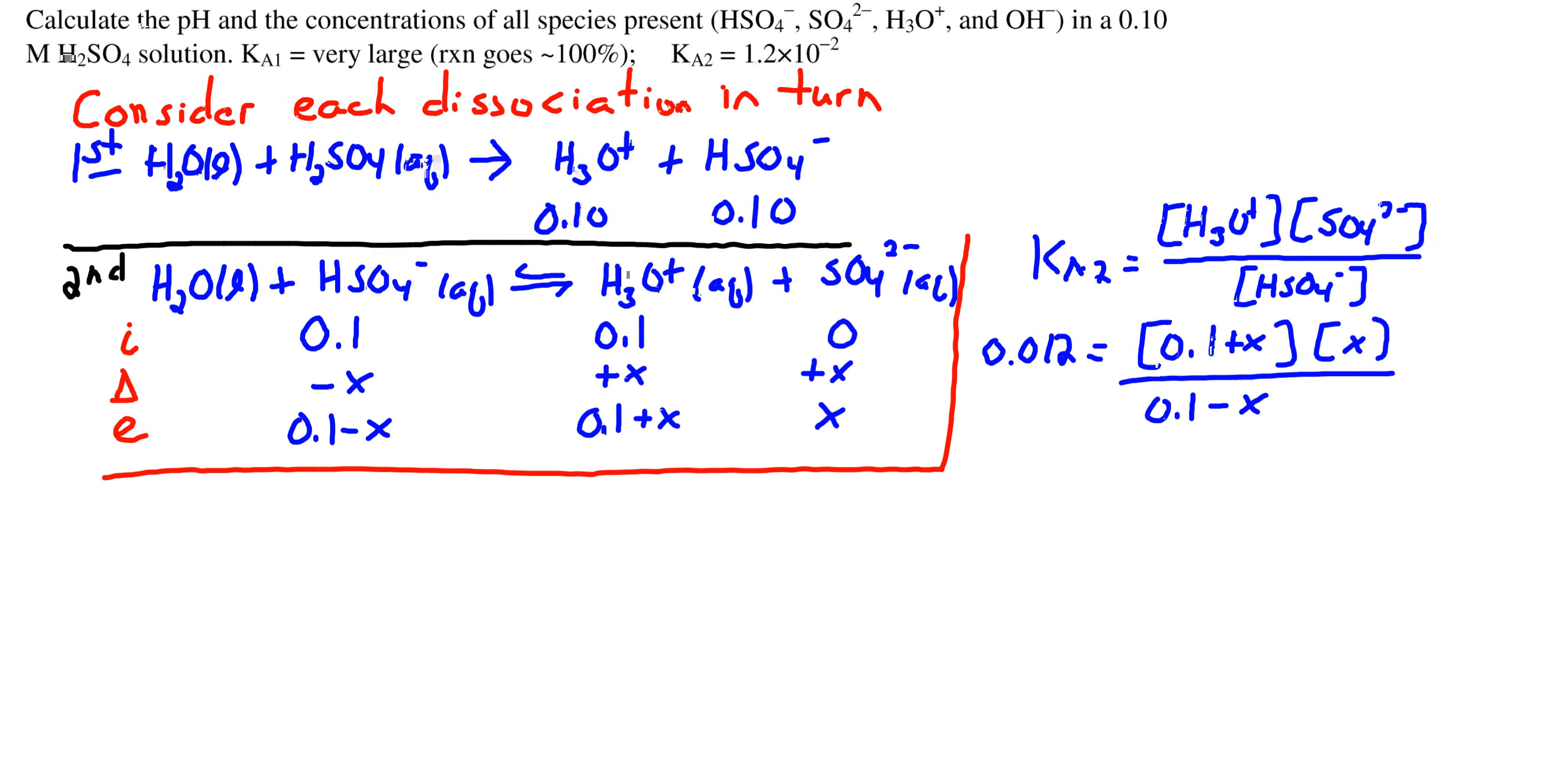We can substitute our equilibrium values into the expression for Ka. Ka2 is 1.2 times 10 to the minus 2, or 0.012. Let's test to see if we can make a simplifying approximation.